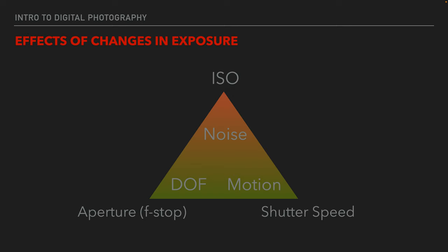We balance those three things out — ISO, aperture, and shutter speed — and each one has an element that can be detrimental to it, that can change the nature of our photo when we change that component. If we ramp our ISO up too much, then we're going to add noise to our image. Adding noise is going to look like grain or have a sandy sort of texture to it. Noise isn't necessarily bad, but if you need to show fine detail in your image, noise is not going to be a good thing.